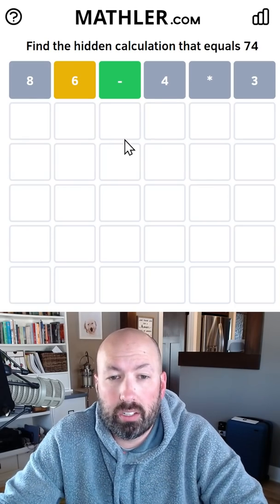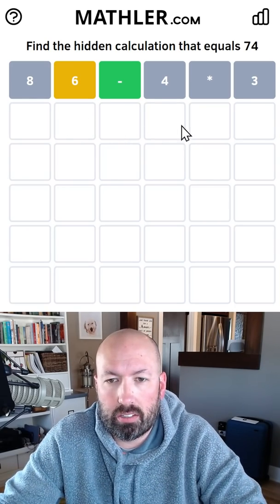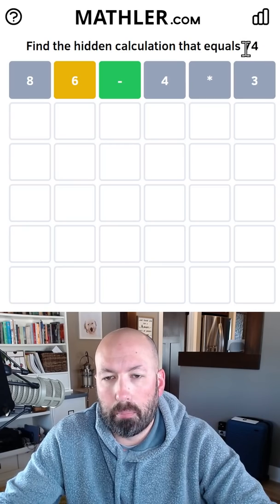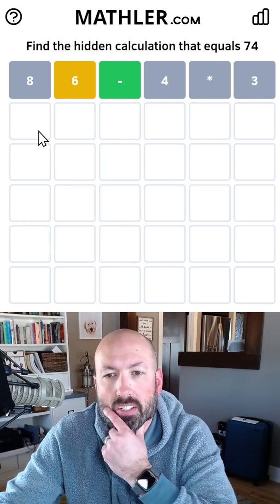Okay, so we are doing a two-digit minus something. If we're subtracting, we've got to be starting above 74. It could be 70-something.